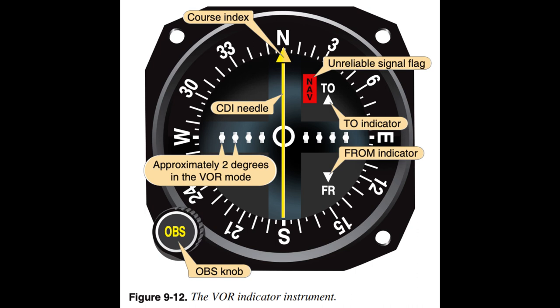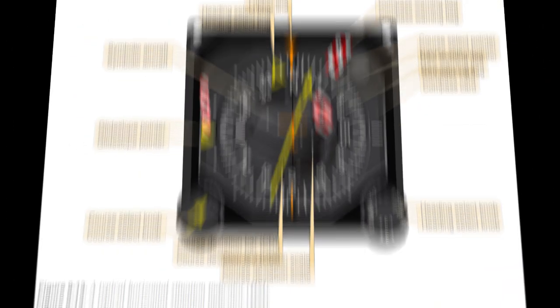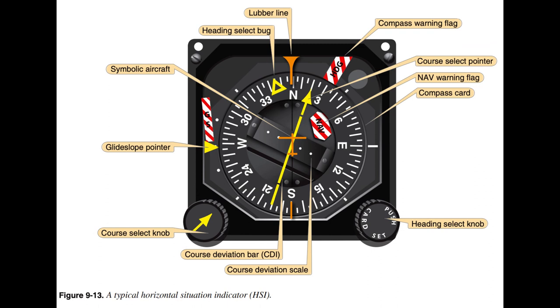TO/FROM Indicator. The TO/FROM indicator shows whether the selected course, if intercepted and flown, takes the aircraft to or from the station. It does not indicate whether the aircraft is heading to or from the station. Flags or Other Signal Strength Indicators. The device that indicates a usable or unreliable signal may be an OFF flag; it retracts from view when signal strength is sufficient for reliable instrument indications. Insufficient signal strength may be indicated by a blank or OFF in the TO/FROM window. The indicator instrument may also be a horizontal situation indicator (HSI), which combines the heading indicator and CDI.